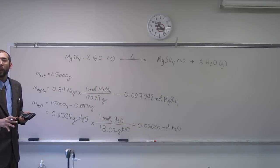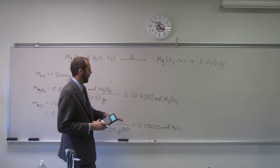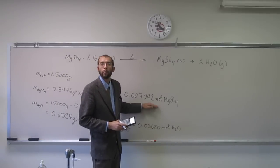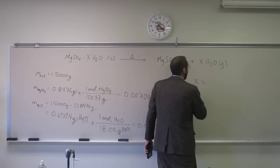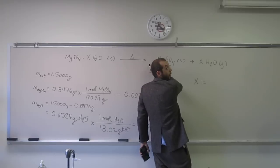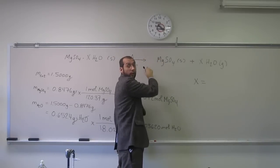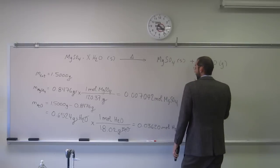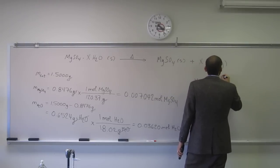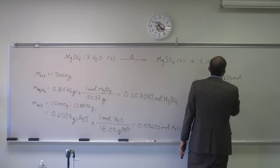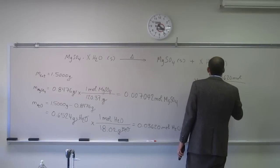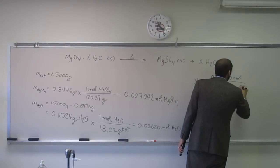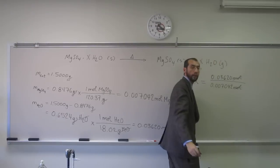And how do I figure out what X is? I've got to take the moles of this and divide it by the moles of this. So when I do that, this is actually X over 1, right? This magnesium sulfate is just a 1. So it's going to be 0.03620 moles divided by 0.007042 moles. Moles cancel.